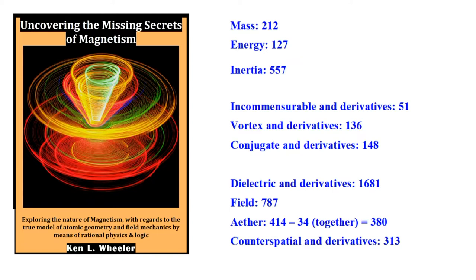He does talk a little bit about inertia. But as you can see by the numbers, he uses 'incommensurable,' 'vortex,' and 'conjugate' — fancy words that have no meaning and are not defined in his book. At the bottom, 'dielectric' and its derivatives appear 1,600 times. 'Field' is half of that. 'Ether' has 380 and 'counter-spatial' 313. It turns out counter-spatial and ether are synonyms in his language — so that's 700 combined. And ether, counter-spatial, and dielectric are all synonyms. So he's got a total of about 2,400 instances of dielectric, ether, and counter-spatial against about 800 fields — three times as many. You can see how he's going to drive his theory.